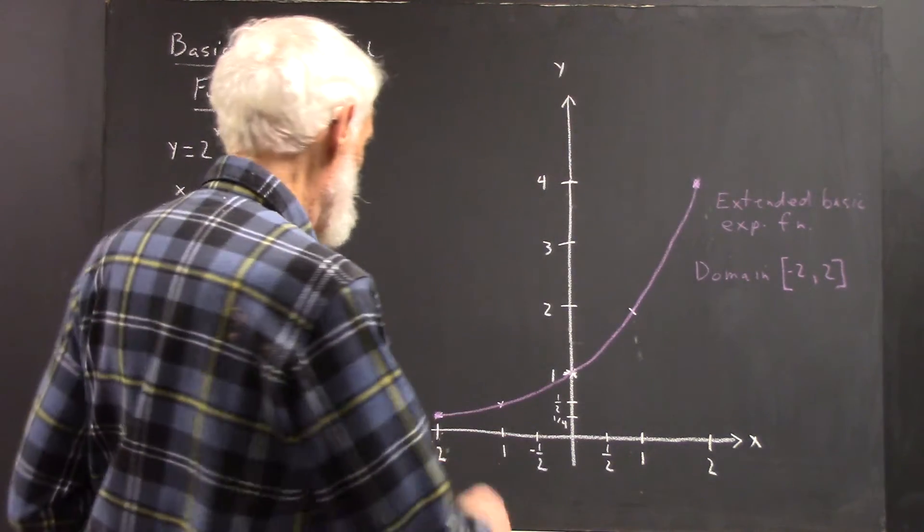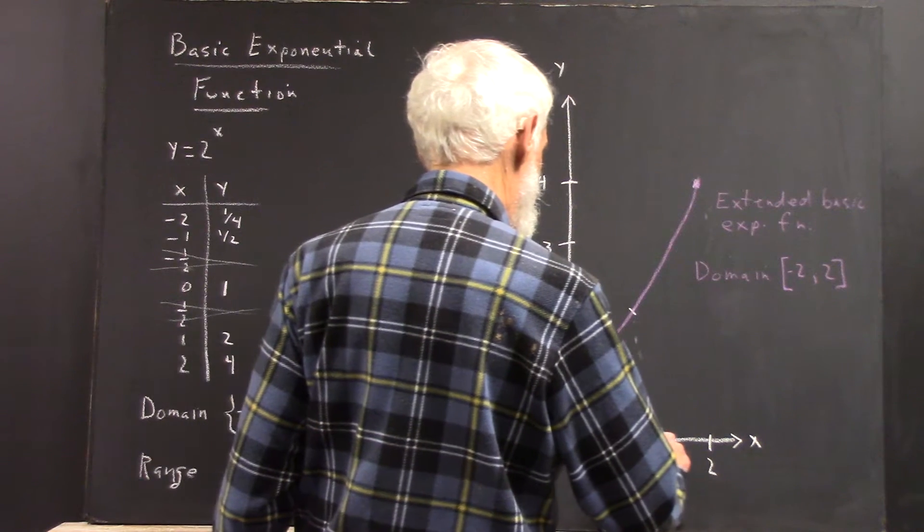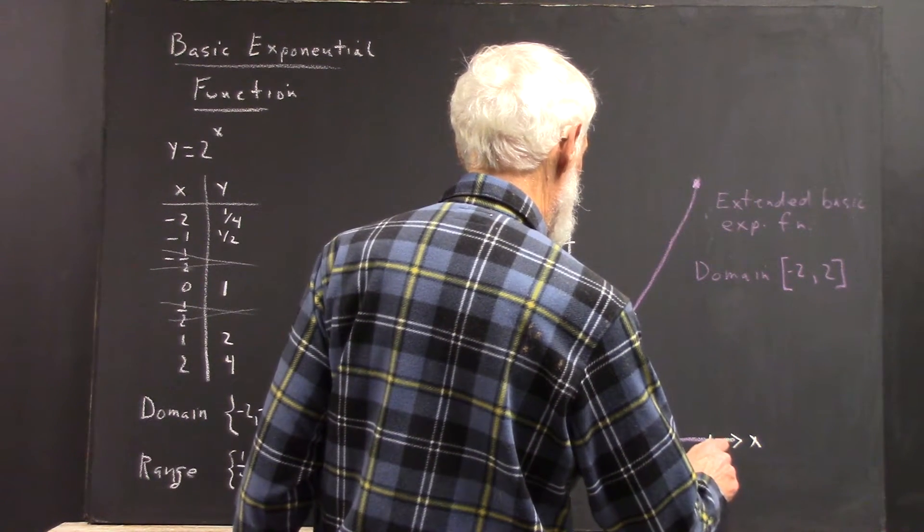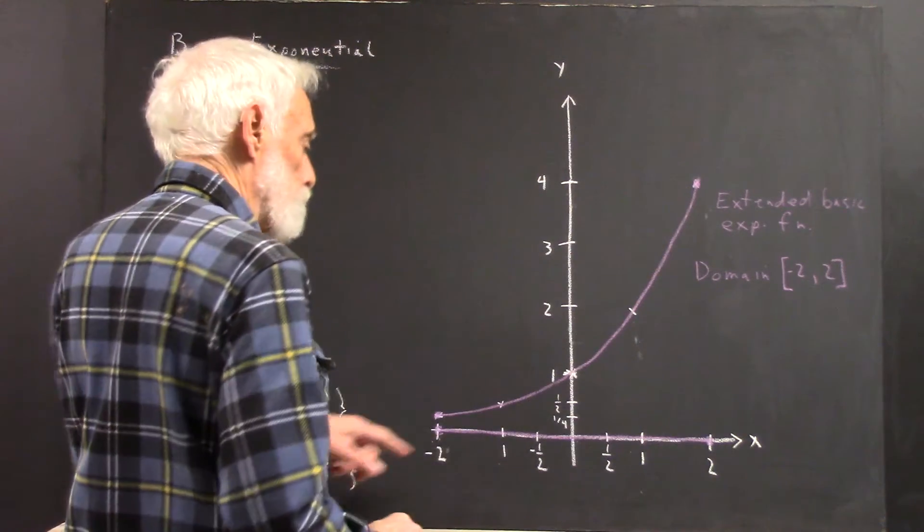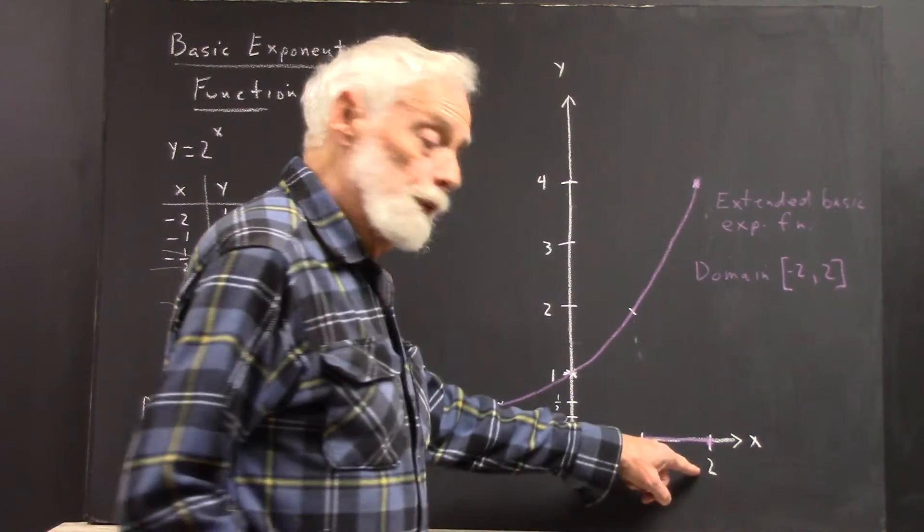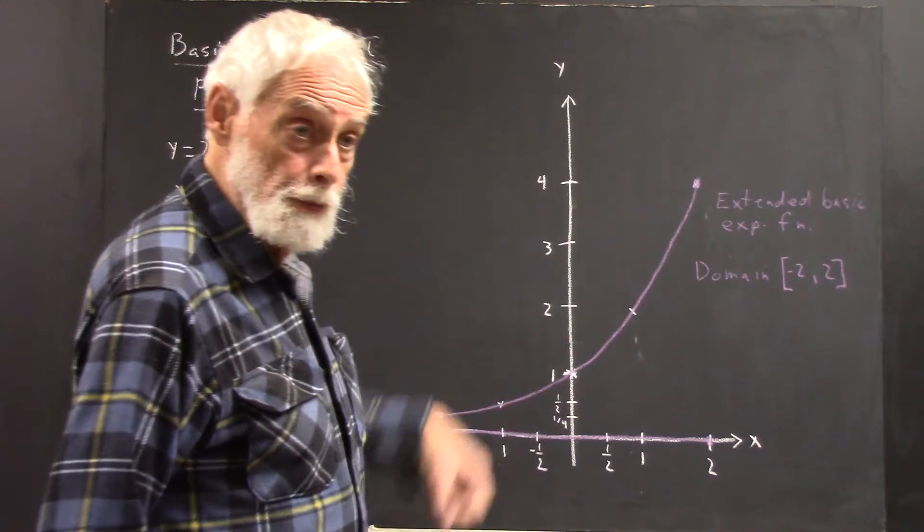Because, well, here it is. Here's the closed interval from negative 2 to 2. This depicts the set of x values that correspond to this curve. That's your domain.